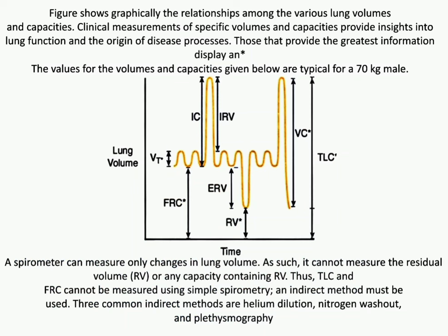The figure shows graphically the relationships among the various lung volumes and capacities. Clinical measurements of specific volumes and capacities provide insights into lung function and the origin of disease processes. Those that provide the greatest information are displayed, and the values for the volumes and capacities given below are typical for a 70 kg male.